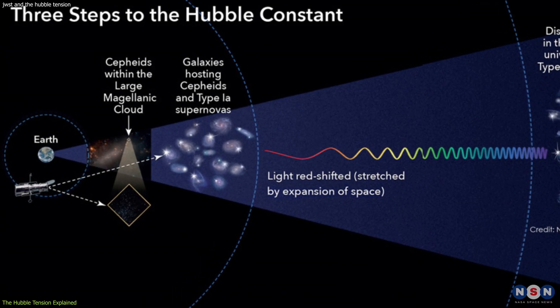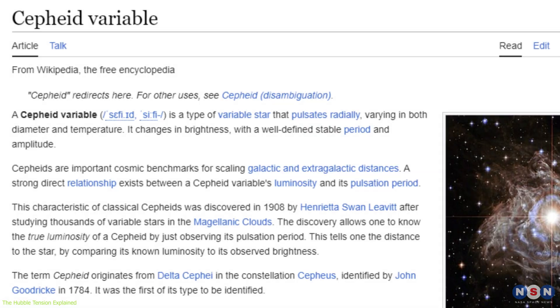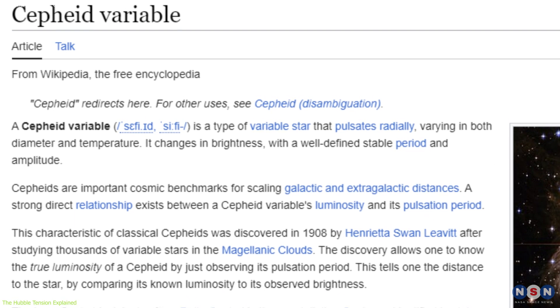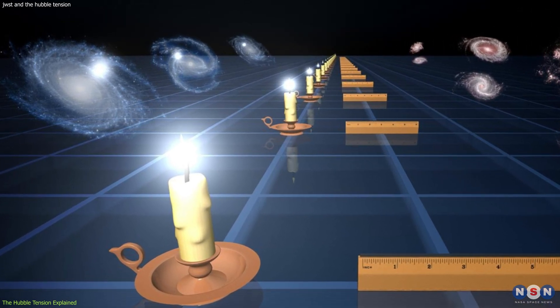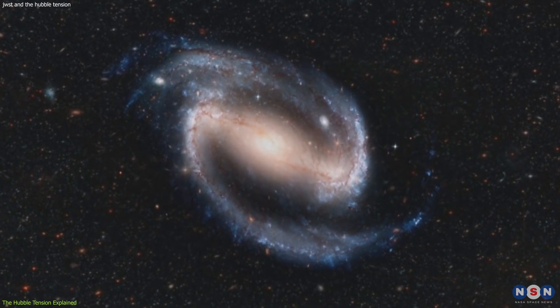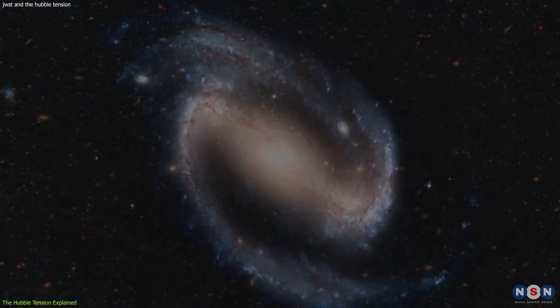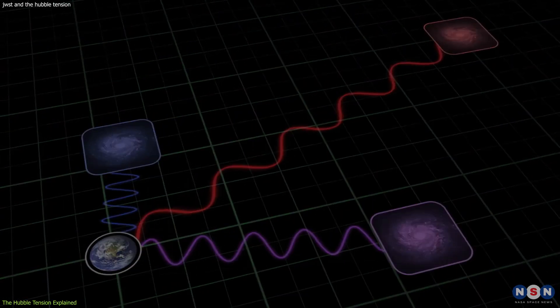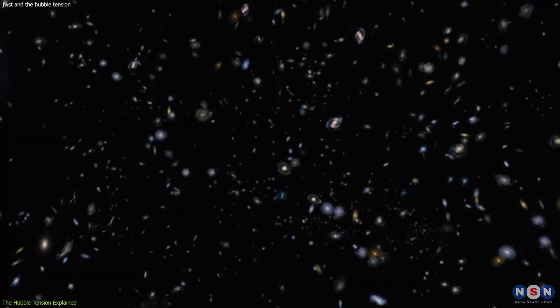One of the key methods used to measure the expansion rate is observing Cepheid variable stars. These stars have a well-established relationship between their brightness and pulsation period, making them reliable standard candles for measuring cosmic distances. By observing Cepheids in distant galaxies and comparing their apparent brightness to their known intrinsic brightness, astronomers can calculate the distances to these galaxies. This, in turn, helps in determining the rate at which the universe is expanding.